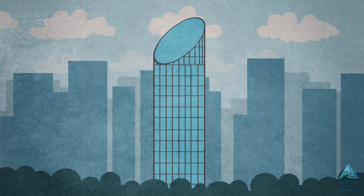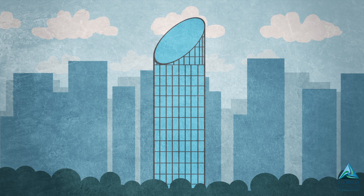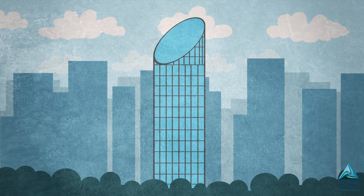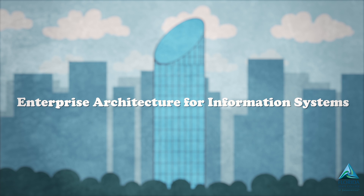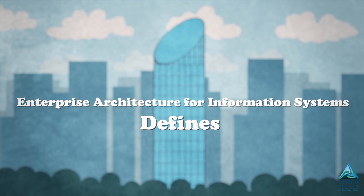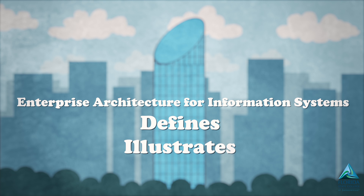Imagine, if you will, a technology skyscraper rising high into the skyline from Florida State College at Jacksonville. That skyscraper is our enterprise architecture for information systems, the blueprint that defines and illustrates the college's technology ecosystem.